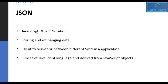JSON stands for JavaScript Object Notation and it is used for storing and exchanging data from client to server or from one system to another. In integration, if you want to send data from one system to another, you can use JSON format. JSON is a subset of JavaScript language and it is derived from JavaScript objects, so if you are familiar with JavaScript objects it will be easy to understand JSON.